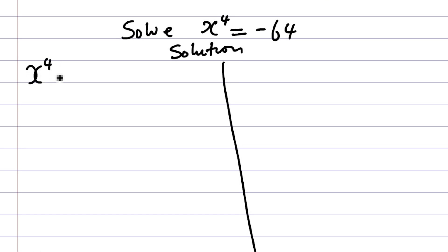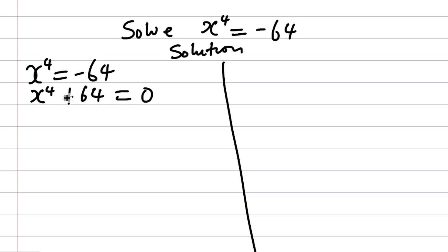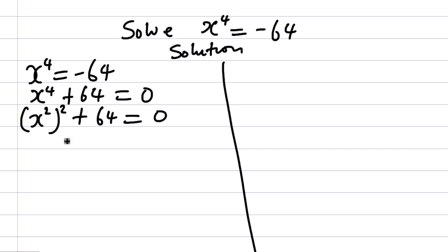They gave us X raised to power 4 equal to minus 64. If this crosses to the other side, I'm going to have X to the power 4 plus 64 equals zero. Now let us reduce this to a quadratic. X to the power 4 is the same as X squared, all raised to power 2, because 2 times 2 gives us 4. Then plus 64 equals zero.